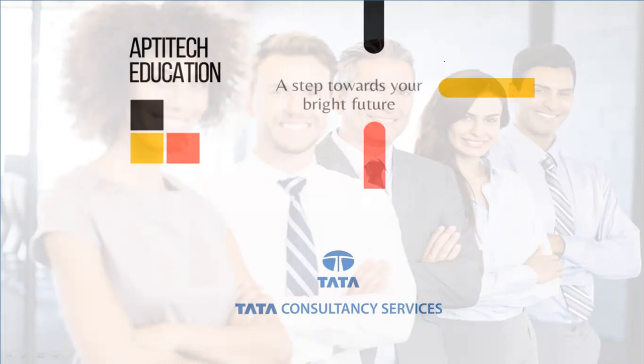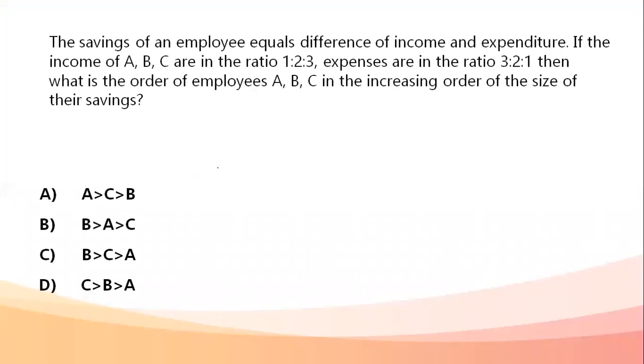Our concern is going to be the TCSNQT Set B paper. We are going to see those questions and solve them. The first question: the savings of an employee equals the difference of income and expenditure. So saving equals income minus expenditure — whatever I'm earning minus whatever I'm spending, the difference becomes my savings.